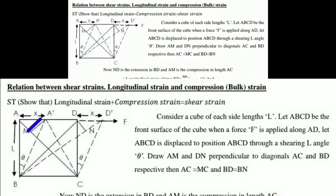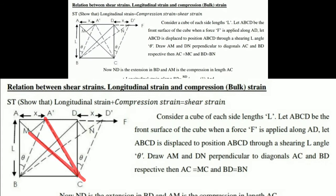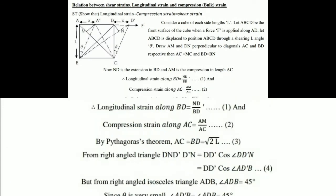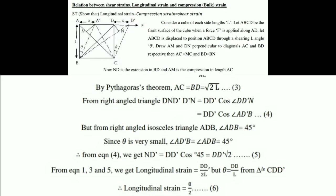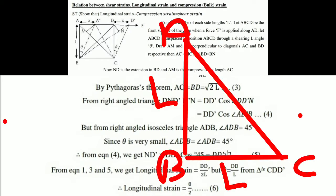Draw AM and DN perpendicular to diagonals AC and BD respectively. Then AC equals MC and BD equals BN. ND is the extension in BD and AM is the compression in AC. The longitudinal strain along BD equals ND divided by B'D', taken as equation 1. Compression strain along AC equals AM divided by A'C', equation 2. Using Pythagoras, AC equals BD equals root 2 times l, taken as equation 3.